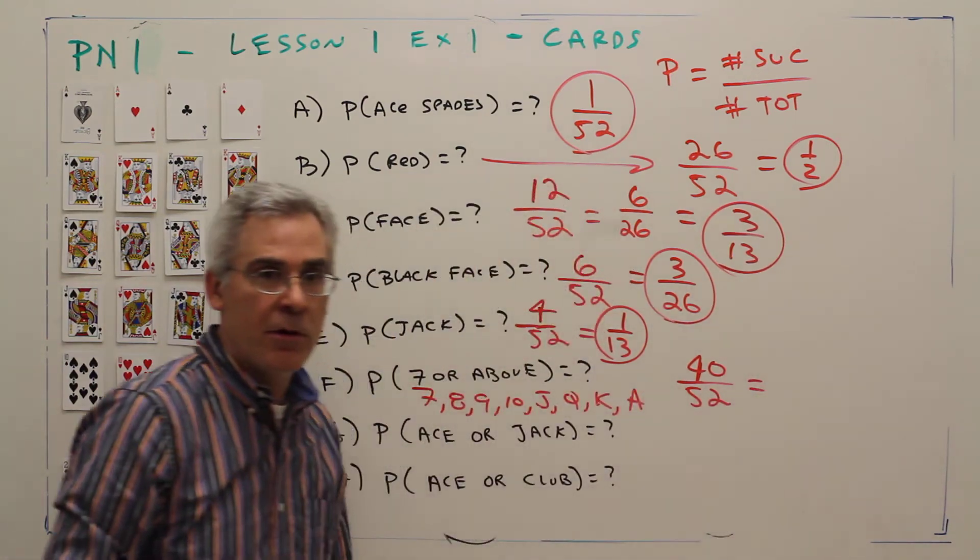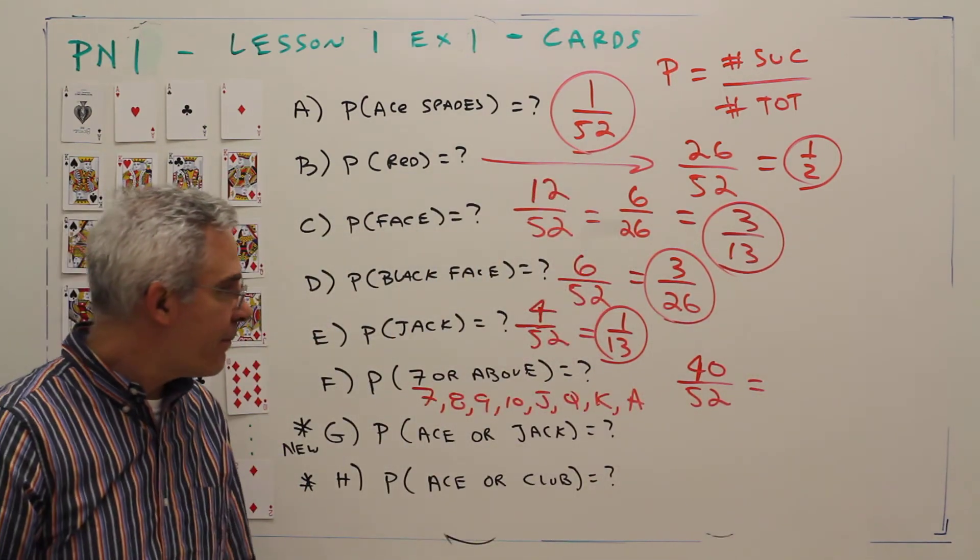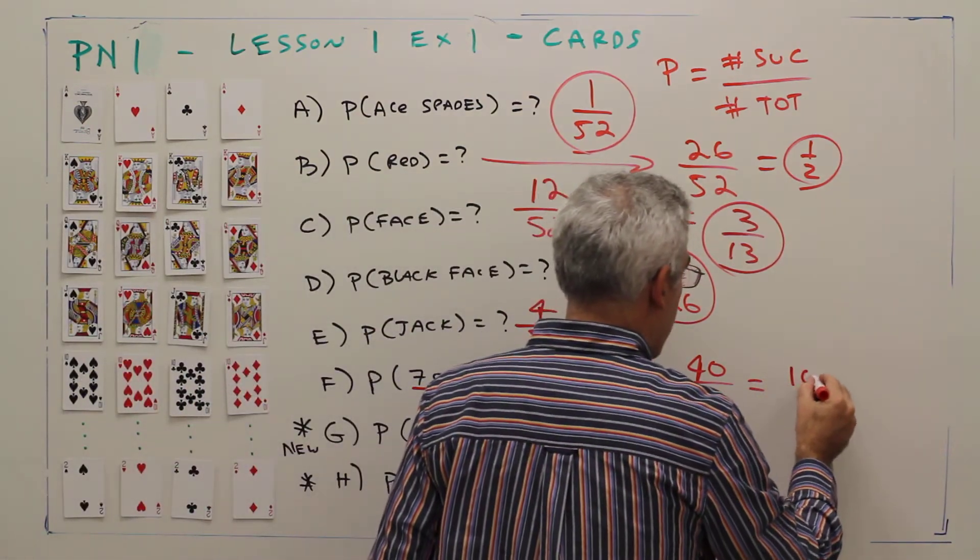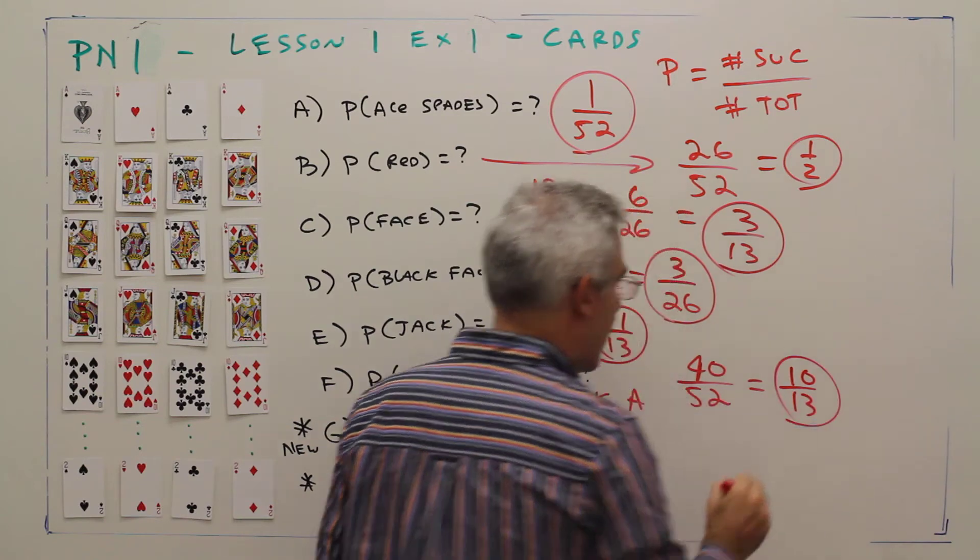That's 40 over 52. Again, I'll just divide through by 4 and get 10 over 13.